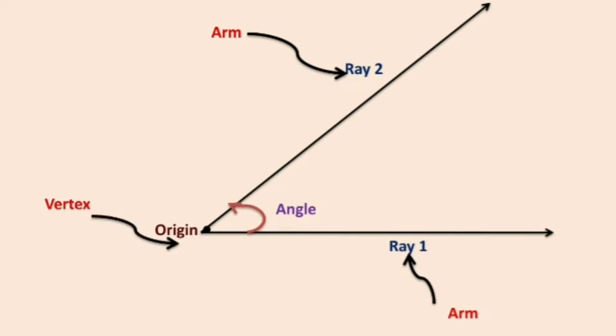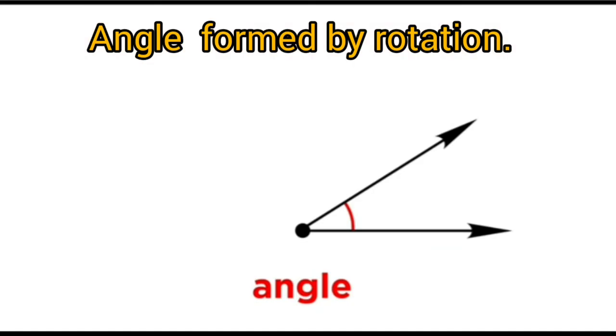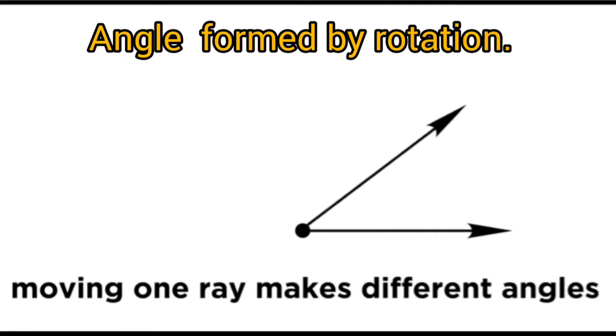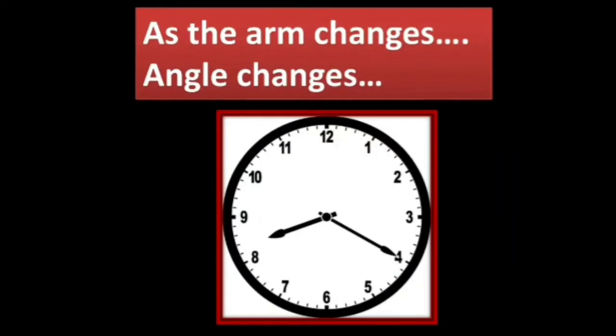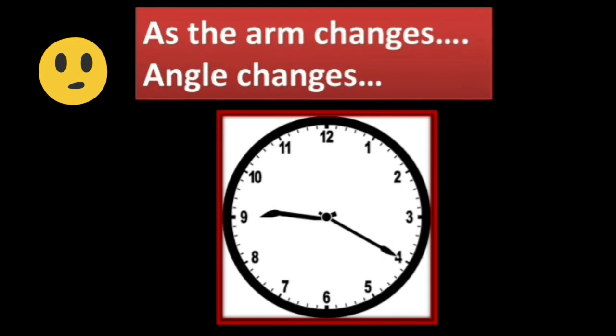Observe the two rays. An angle is formed by rotation. One ray rotates around its initial point. When it rotates, it has a different position at different times. Think about a clock. The clock hands show different angles.